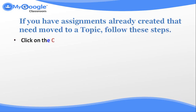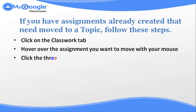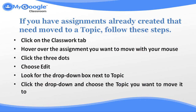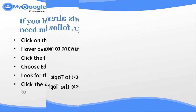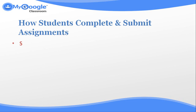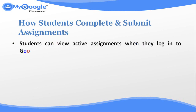If you have assignments already created that need to be moved to a topic, follow these steps: click on the Classroom tab, hover over the assignment you want to move with your mouse, click the three dots, choose Edit, look for the drop-down box next to the topic, click the drop-down, and choose the topic you want to move it to.